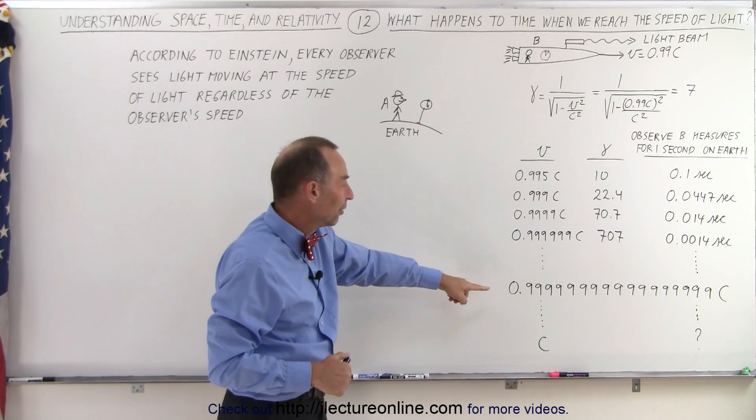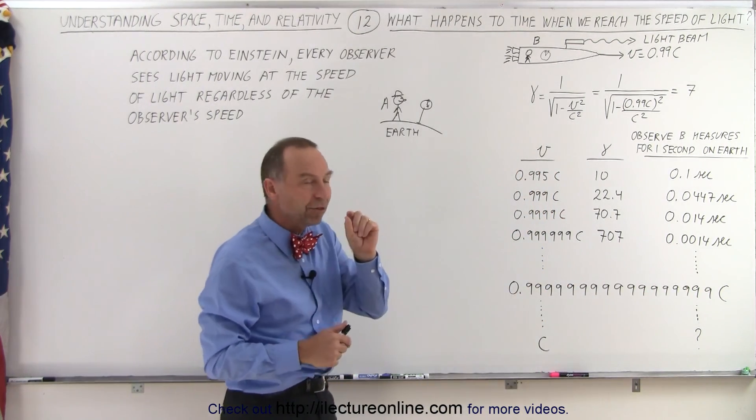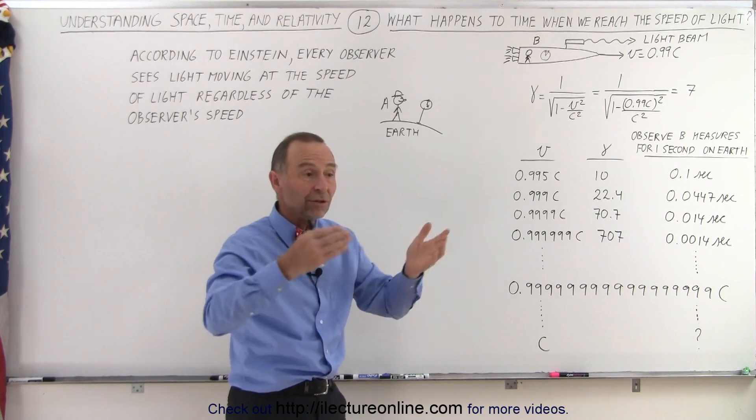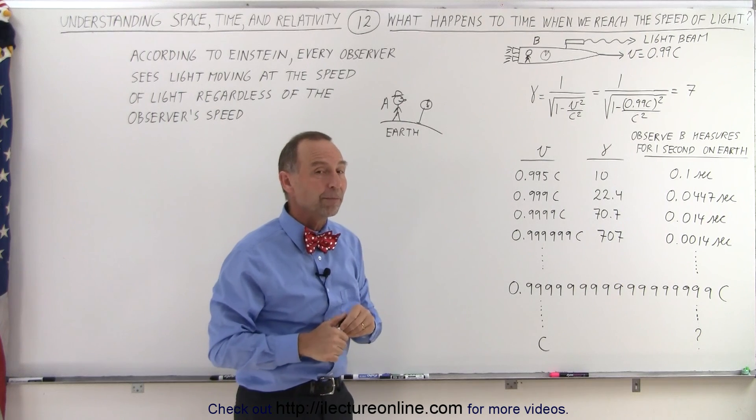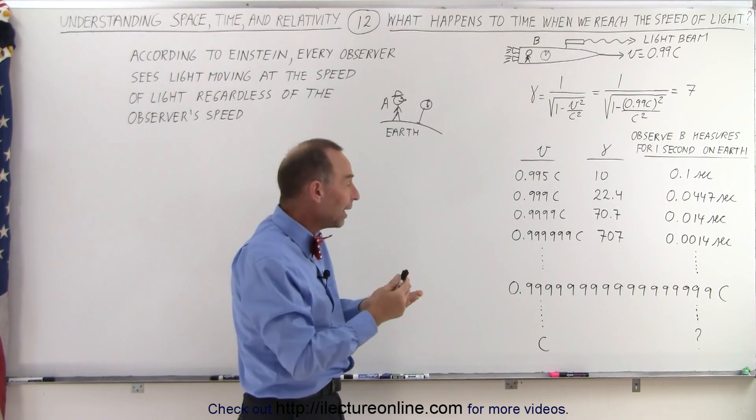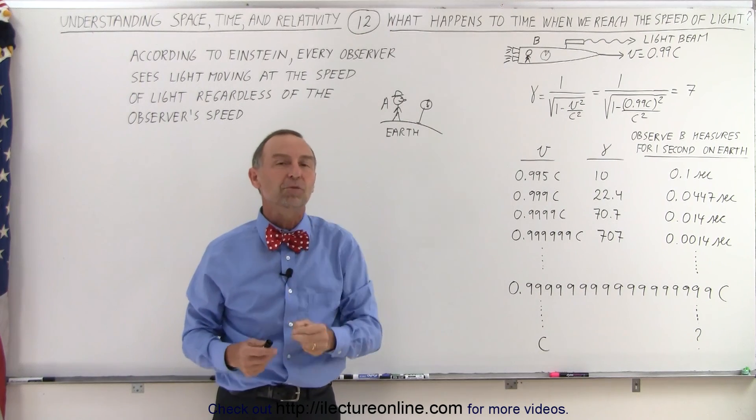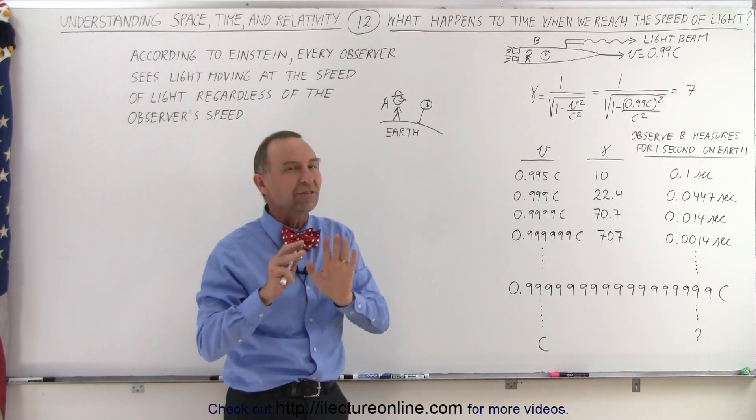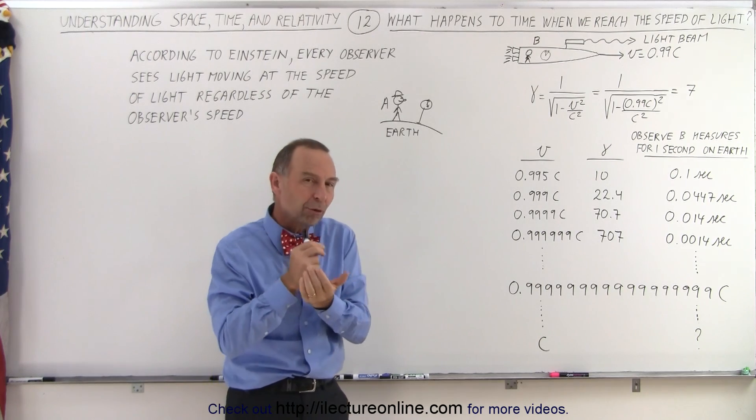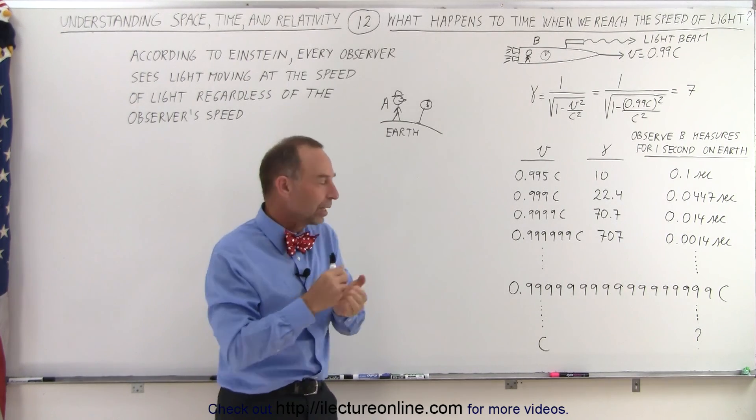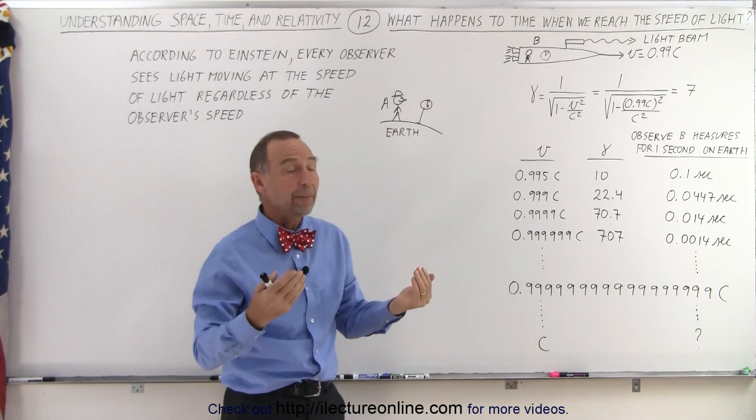What would happen if the speed now reaches this close to the speed of light? You can imagine then as time passes on the Earth, a very small amount of time will pass on the spaceship. And then ultimately, what would happen to time if the spaceship could actually speed up to the speed of light? Now, we know that's not possible, and we'll learn later why that is the case, but let's for a moment assume that we could actually get the spaceship to move at the speed of light. What would happen to time?